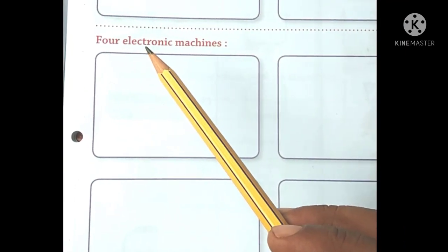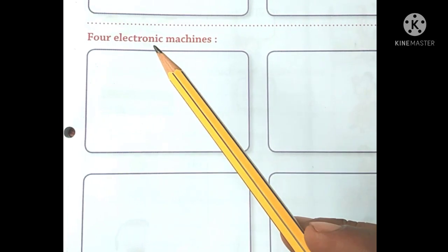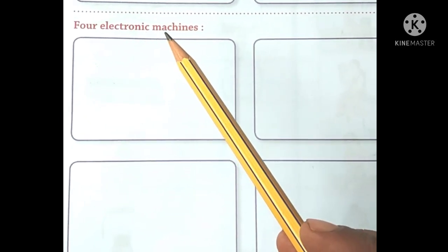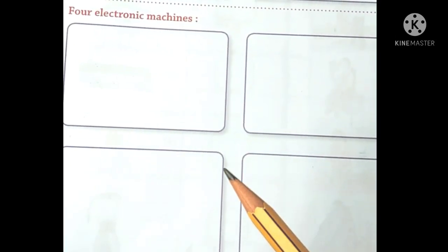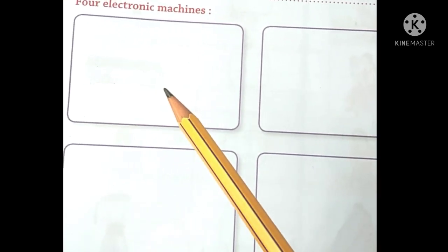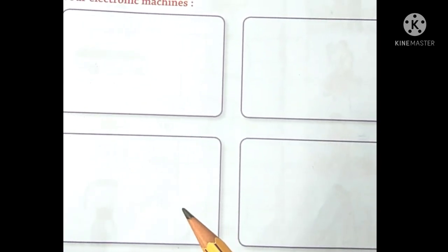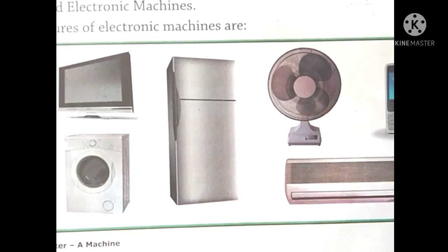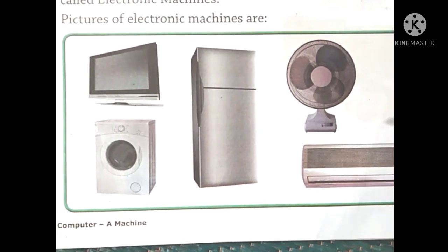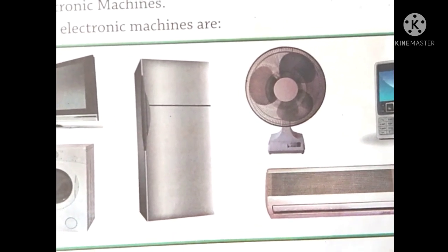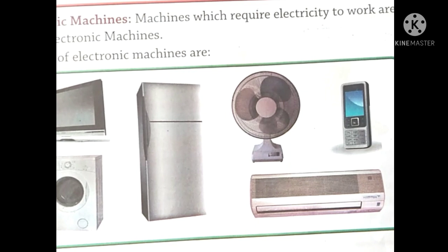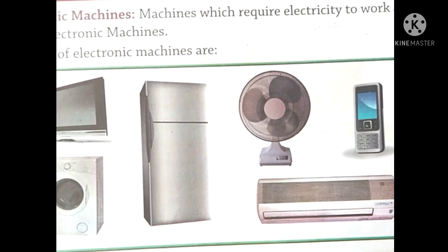For electronic machines — electronic machines yaane bijli se chalne wale machines — woh aapko newspaper ya magazine mein se lena hai aur yahan pe stick karna hai. Yahan pe dekho — electronic machines diye gaye hain, aap koi bhi electric machines le sakte ho.